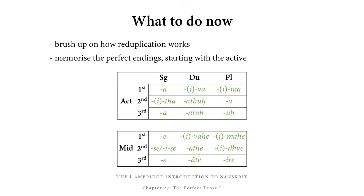So now you have seen how to form perfect verb forms in Sanskrit. What you should do to make that knowledge stick is brush up on how reduplication works and remind yourself of which sounds do not reduplicate identically. Secondly, you need to memorize this new set of perfect endings, starting with the active. Don't try to do both sets at once — do the first set today and the second set later today, or tomorrow, or whatever works best for you.